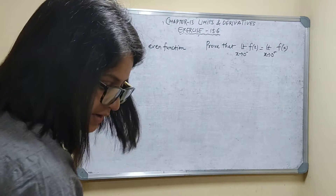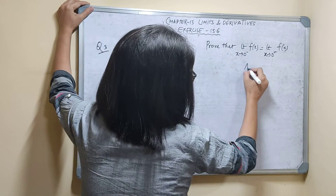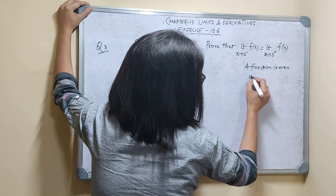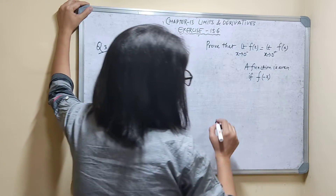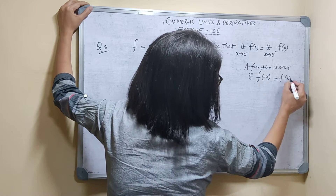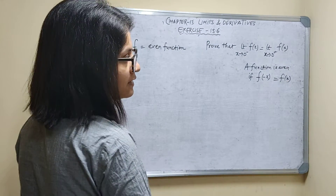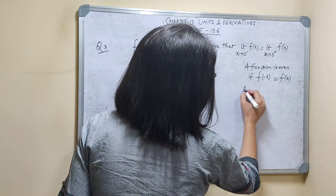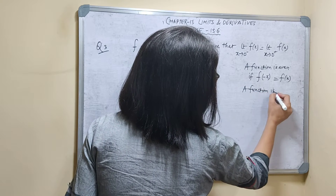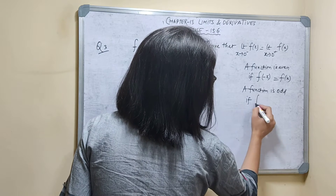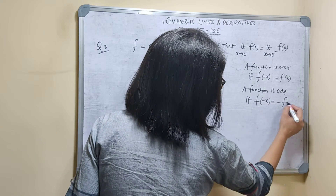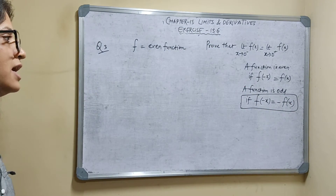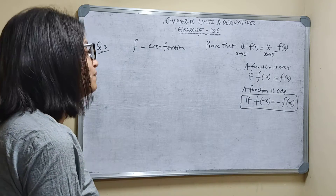f is an even function. First, I will tell you what is an even function and what is an odd function. A function is even if f(-x) is equal to f(x) — meaning if you put minus x in place of x and the function remains the same, then the function is even. A function is odd if f(-x) is equal to negative f(x). But our condition is that the function is even, meaning f(-x) = f(x).